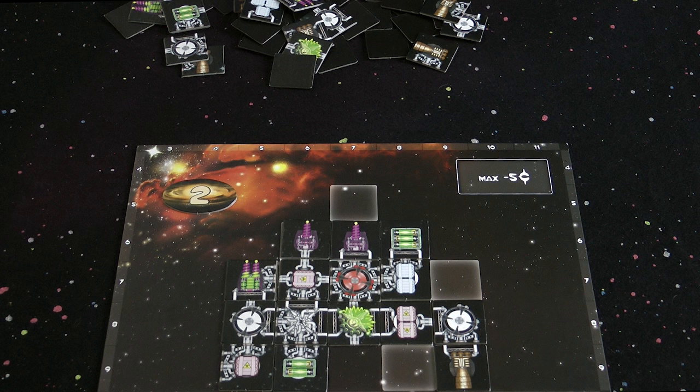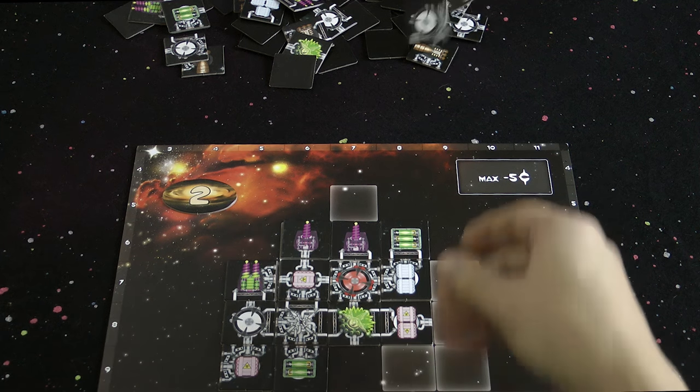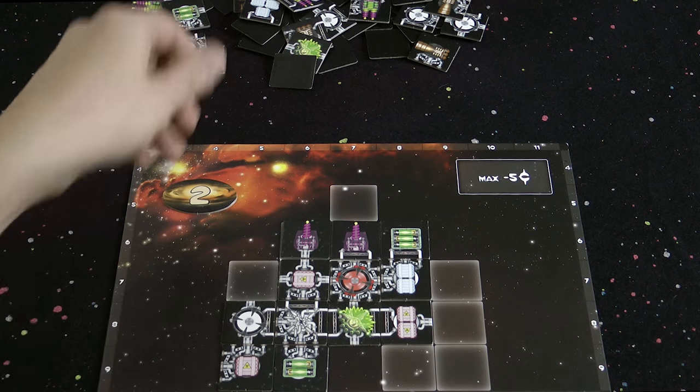After all players have finished building their ship it's time to do a quick check on all the ships to ensure they are legal. If you have built your ship illegally just remove the offending components back to the warehouse. In the full game this is done differently, but for now let's keep things simple.